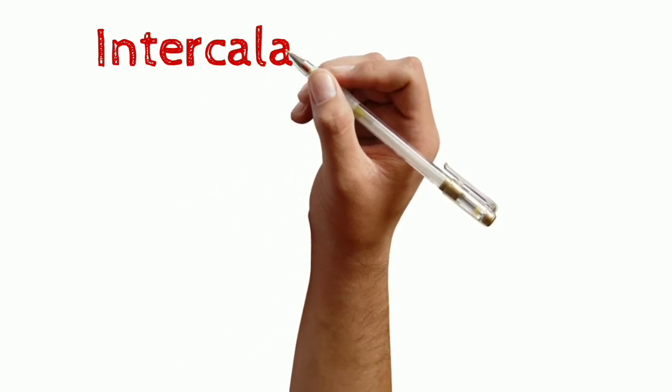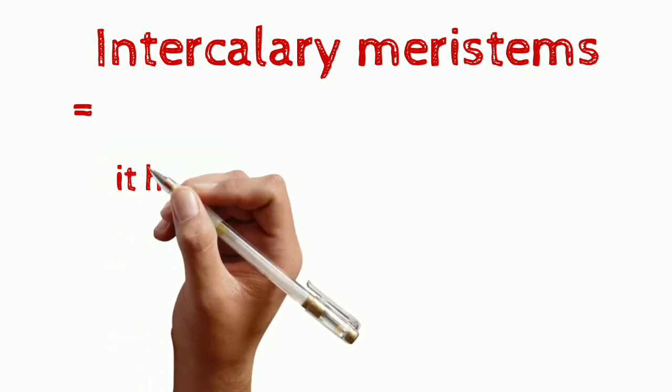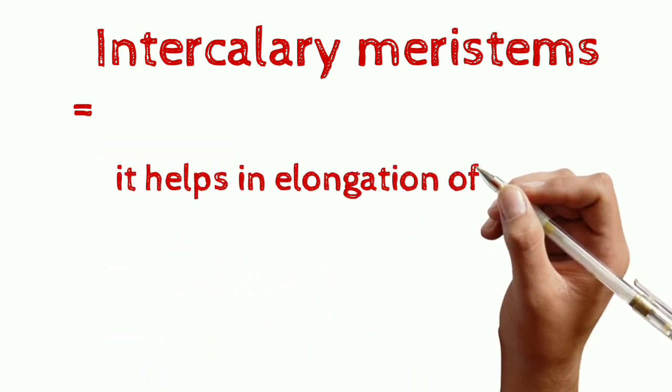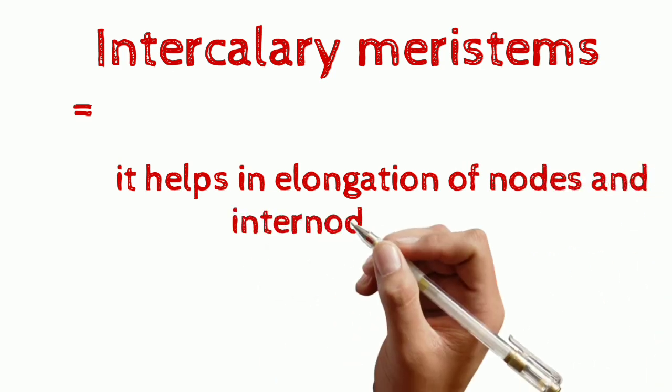Now we will discuss the second part of meristematic tissue, that is intercalary meristematic tissue. It helps in elongation of nodes and internodes of the plant.